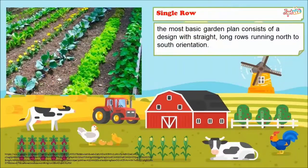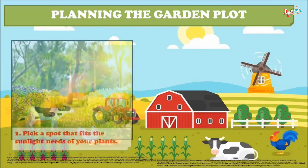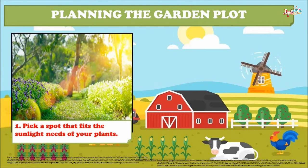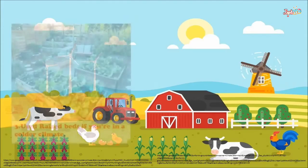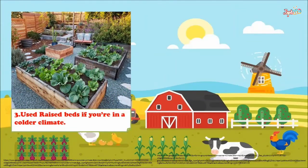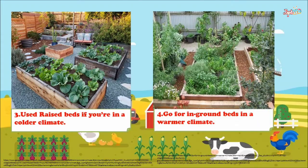For a single row, the most basic garden plan consists of a design with straight long rows running in a north to south orientation. For planning the garden plot, first pick a spot that fits the sunlight needs of your plants, choose a spot that is level and even. Use raised beds if you are in a colder climate, and go for in-ground beds in a warmer climate.